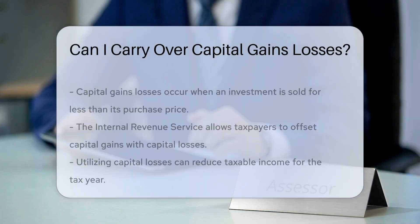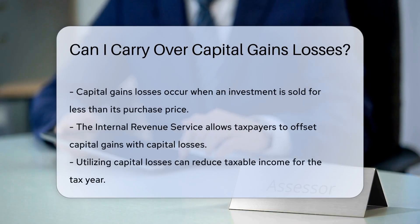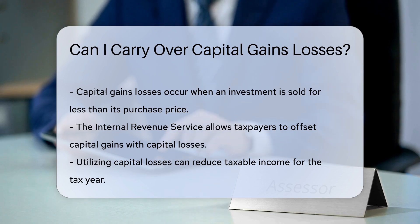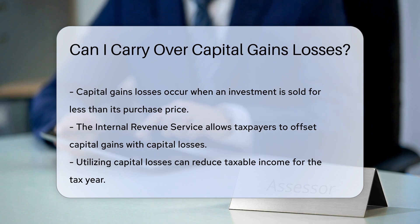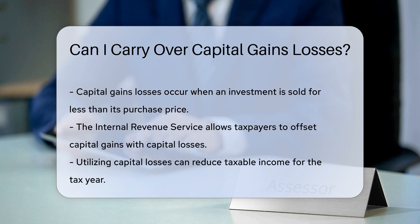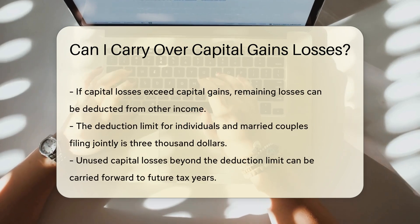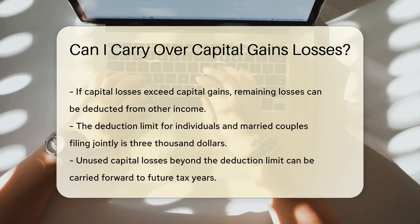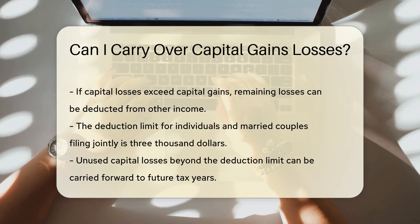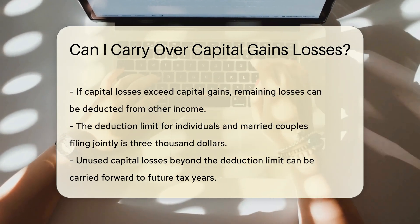Capital gains losses occur when an investment is sold for less than its purchase price. The Internal Revenue Service allows taxpayers to utilize these losses to offset capital gains. This means if you have capital gains in a given tax year, you can use your losses to reduce your taxable income. If your capital losses exceed your gains, you can deduct the remaining losses from other income, such as wages or salaries, up to a certain limit.